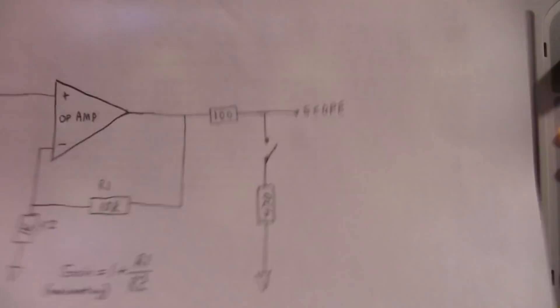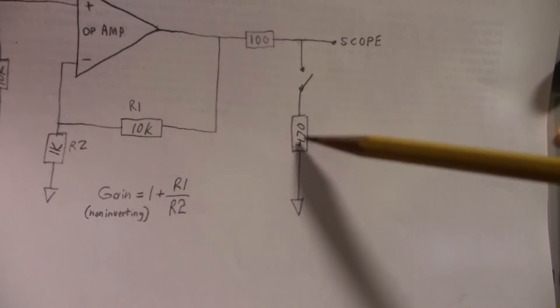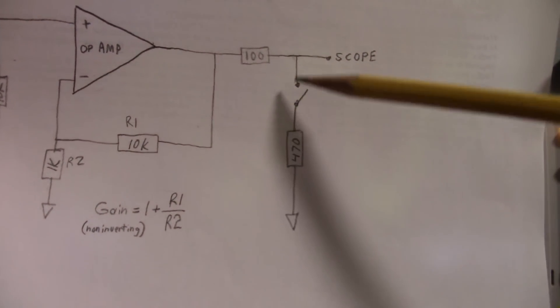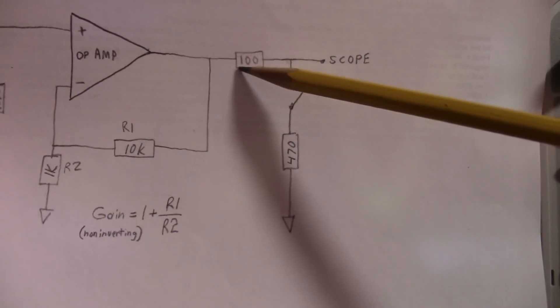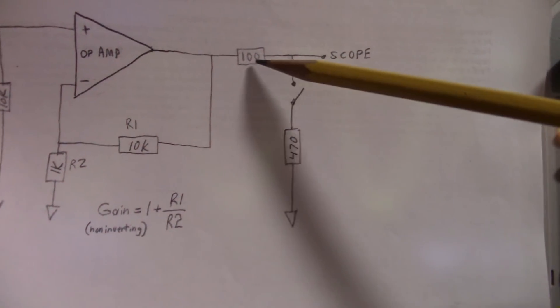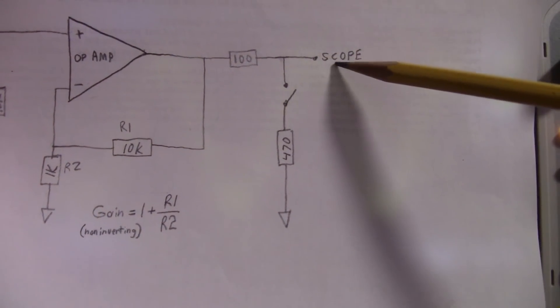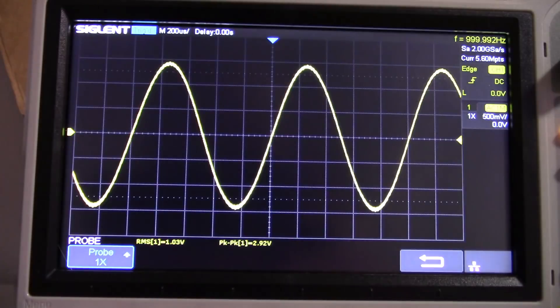Okay, so what I'm going to do now is close in this 470 ohm resistor that's on the output. And with this 100 ohm resistor, it's going to form a voltage divider. And you'll see on the scope that the amplitude of the waveform will reduce a little bit.